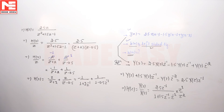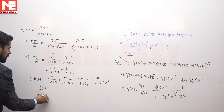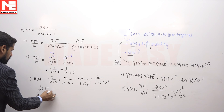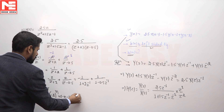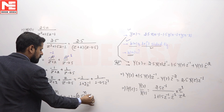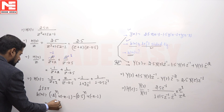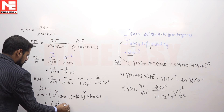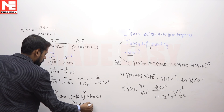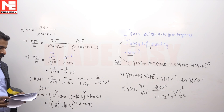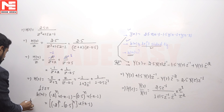Since the impulse response is left-sided, applying the left-sided inverse Z-transform: the first term gives −(−2)ⁿ·u(−n−1) and the second term gives −(0.5)ⁿ·u(−n−1). This can be written as [−(−2)ⁿ − (0.5)ⁿ]·u(−n−1). Looking at all four options, option B satisfies this result, so the answer is option B.